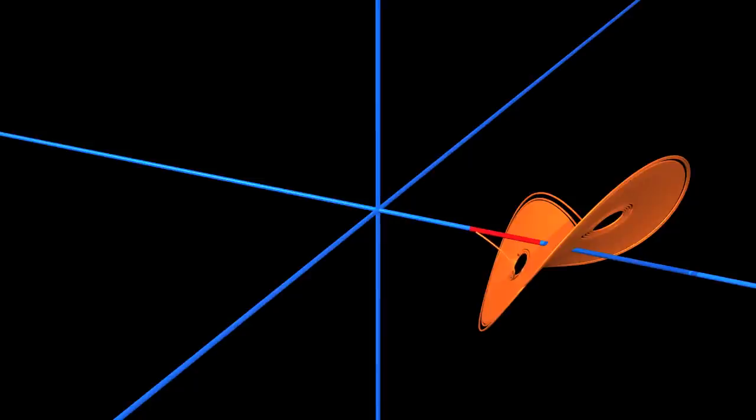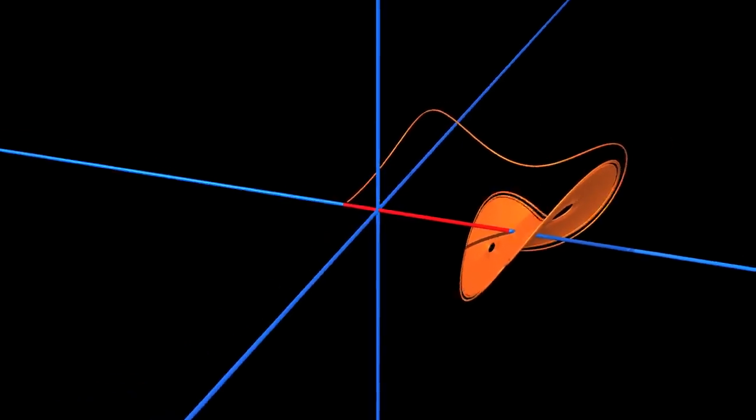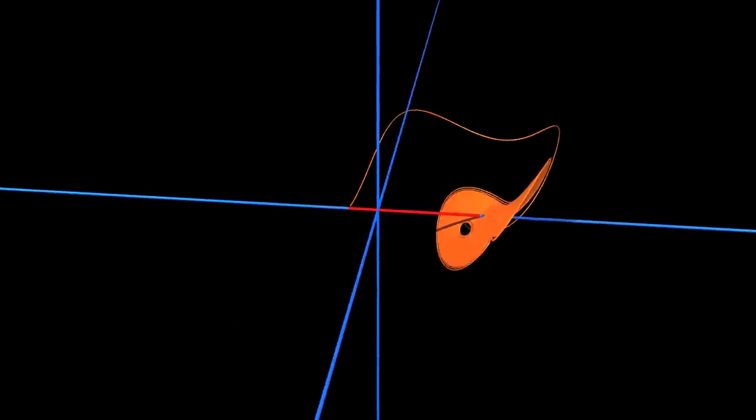As the initial condition moves slowly along the blue axis, everything behaves as it should. The trajectory always accumulates on the orange attractor, even if it takes a little while to get there. We can easily check that the statistics have not changed.